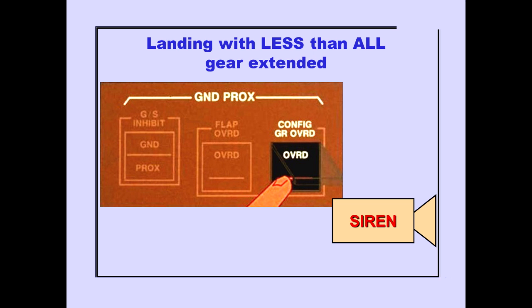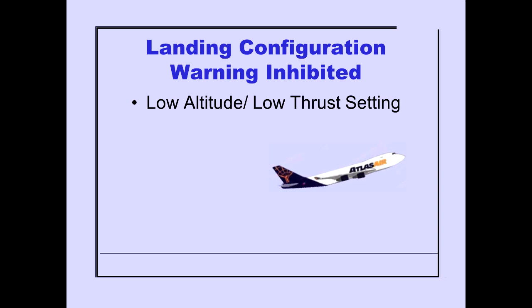If the airplane must land with less than all gear extended, pushing the ground proximity configuration gear override switch inhibits the warning siren. The landing configuration warning is also inhibited automatically on takeoff from gear retraction until 140 seconds elapsed time or 800 feet, whichever occurs first. The warning is inhibited for up to two thrust levers retarded.